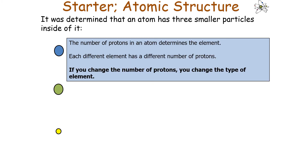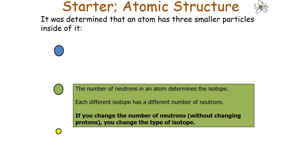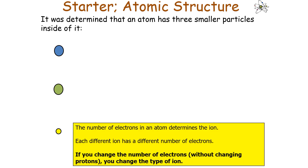The number of protons in an atom determines the element — each different element has a different number of protons, and if you change the number of protons, you change the type of element. The number of neutrons determines the isotope — each different isotope of an element has a different number of neutrons, so changing neutrons without changing protons changes the isotope. The number of electrons determines the ion — each different ion of the same element has a different number of electrons, so changing electrons without changing protons changes the type of ion.